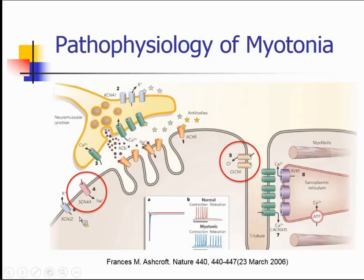This is the muscle membrane here. Ordinarily, action potentials are propagated down a terminal motor nerve axon, forcing vesicles of acetylcholine to release their contents that then bind to receptors on the postsynaptic membrane. In addition, there's opening of sodium channels — in particular SCN4A — which drives positively charged sodium ions into the muscle compartment intracellularly.